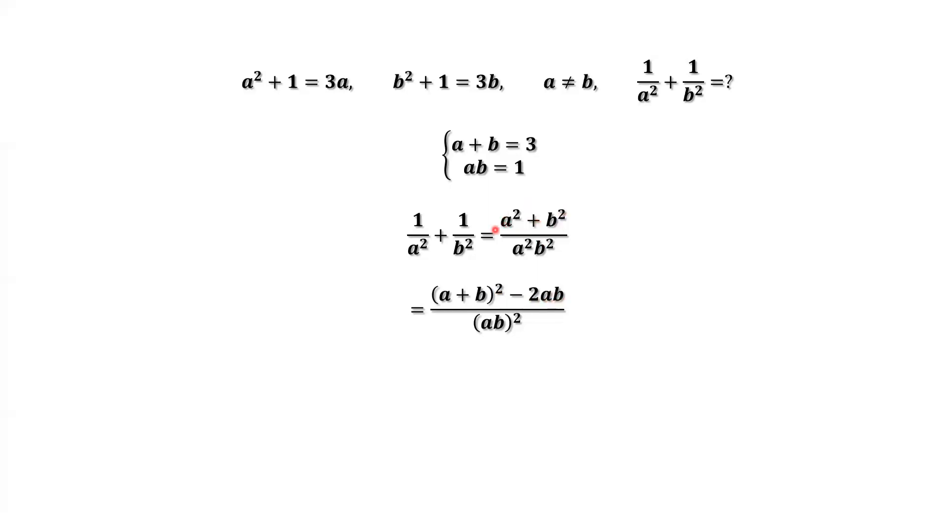Here, the numerator is a squared plus b squared. The first part, a plus b squared equals a squared plus b squared plus 2ab. Here we have minus 2ab. Plus 2ab minus 2ab cancel each other. Then we have a squared plus b squared.